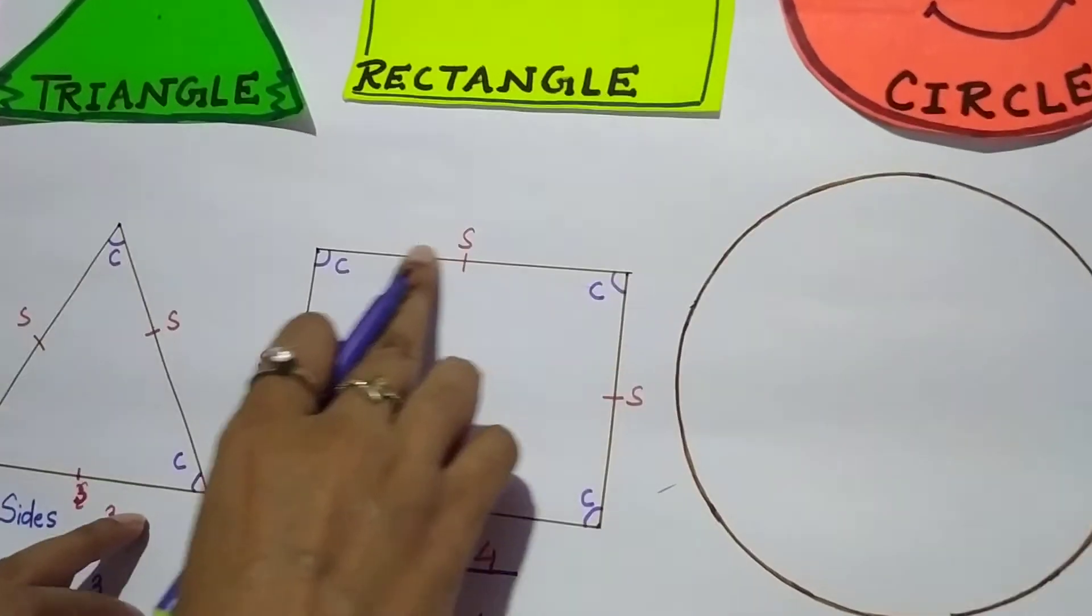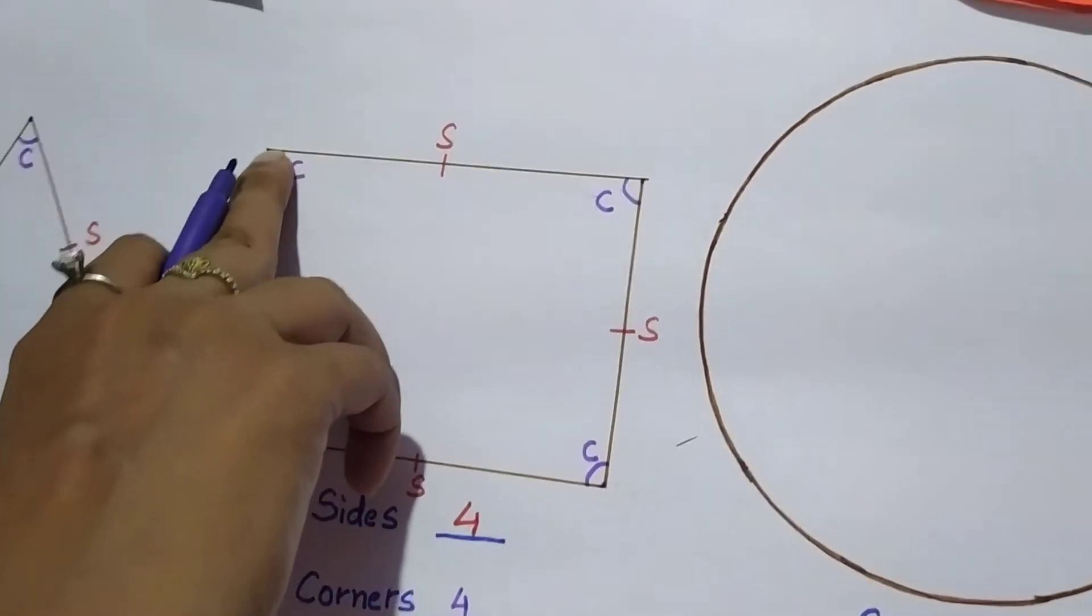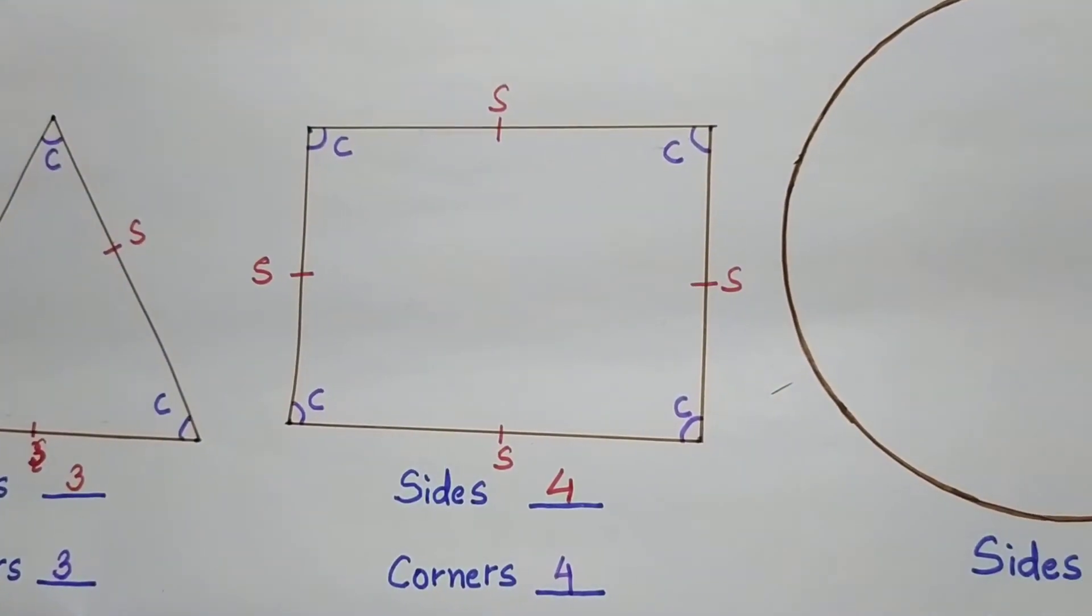So you simply have to count the lines for sides. And the corner where two lines come together and meet, you have to count that corner.